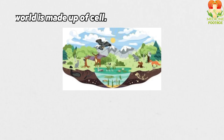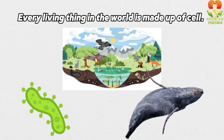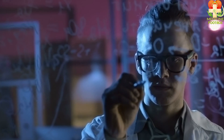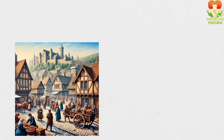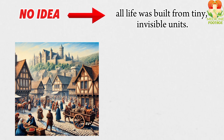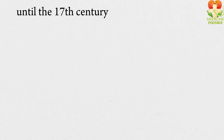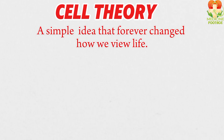Did you know that every living thing, from the tiniest bacterium to the largest whale, is made up of cells? But how did scientists come to discover this mind-blowing truth? Centuries ago, we had no idea that all life was built from tiny invisible units. It wasn't until the 17th century, with the invention of the microscope, that we even began to glimpse the mysterious world inside living organisms. But the real breakthrough came with the cell theory, a simple yet revolutionary idea that forever changed how we view life.